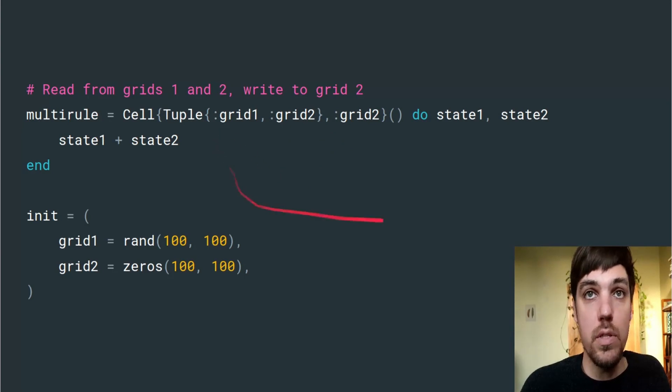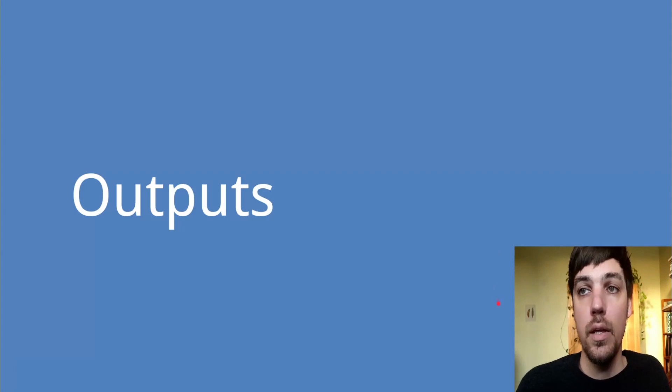So when we do this, we'll be passed in state 1 and 2 from those grids, and the output that we return will be written to grid 2. In combination with that rule, we need to define our initialization grids with the same names that we've specified in the types, grid 1 and 2.